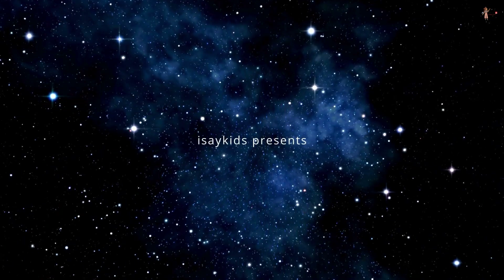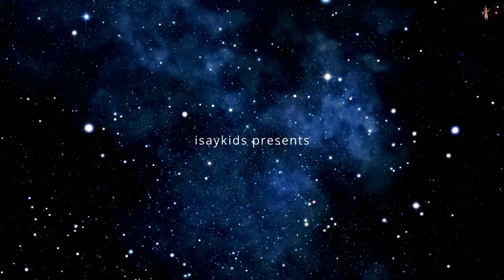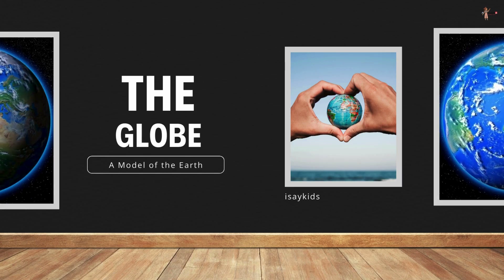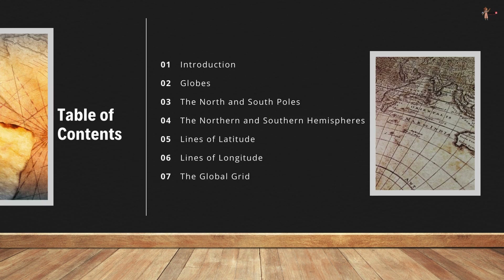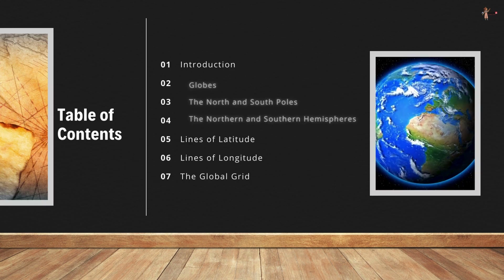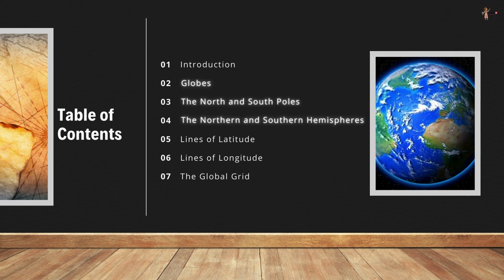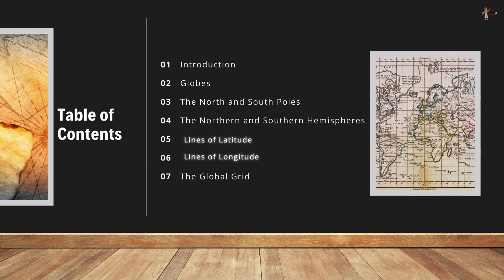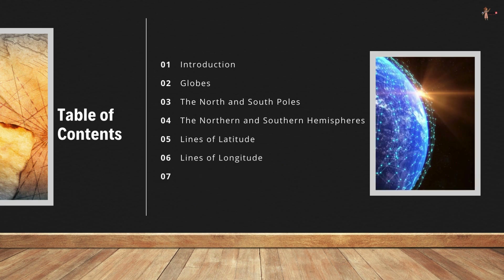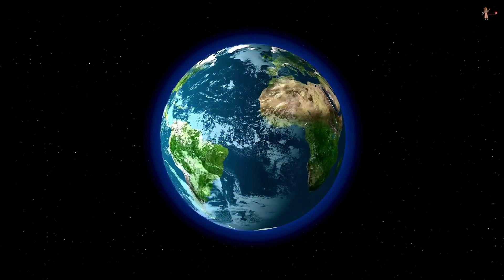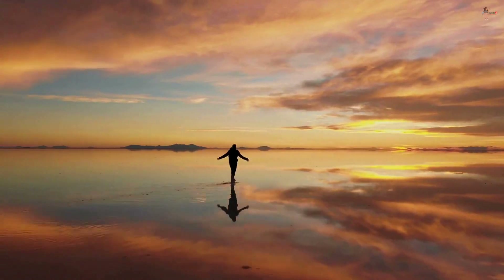Hey there, students! You will find this chapter very interesting as we study about the globe, which is a model of the earth. By the end of this chapter, you will be able to explain how a globe serves as a model of the earth, explain what lines of latitude and longitude are, list their main features and differentiate between the two, and locate places on the globe using the global grid.